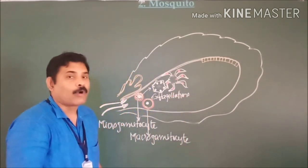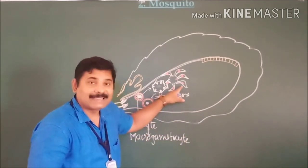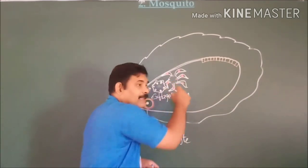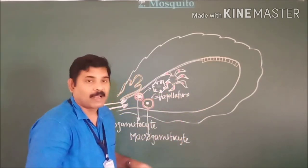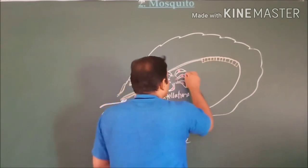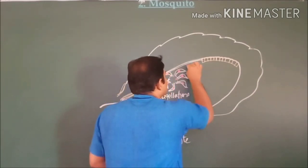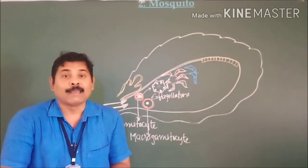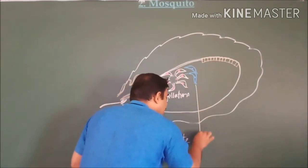Due to the lash-like movement during exflagellation, the flagella-like structures are released from the micro gametocyte. These released structures are long, slender structures known as male gametes.